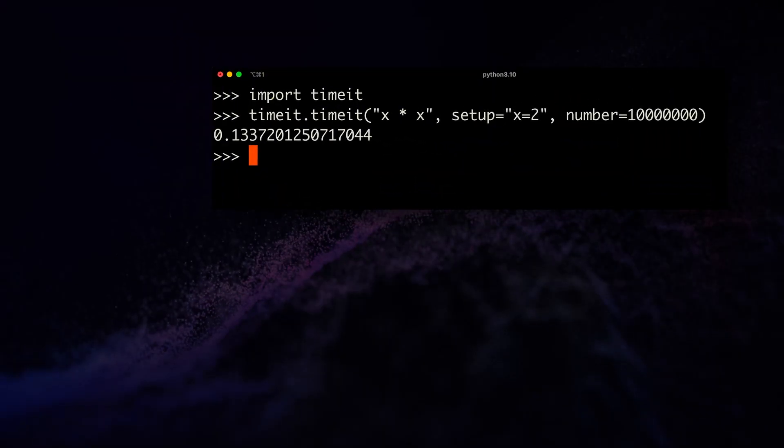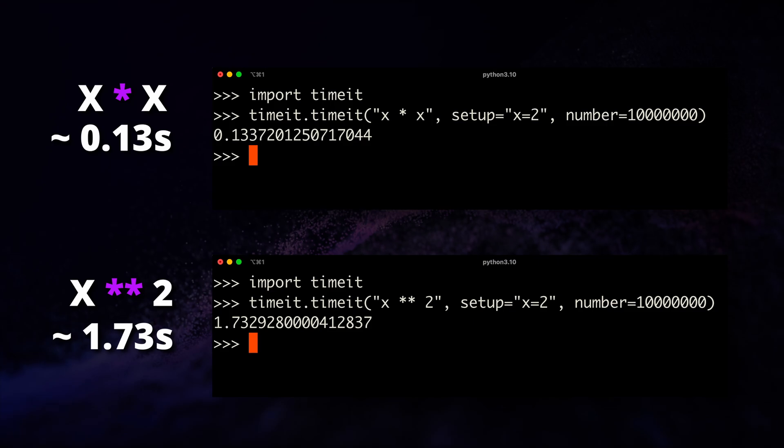I've recently been evaluating the speed of arithmetic operations in Python, and I stumbled upon something very strange. In my local version of Python, Python 3.10, x times x with integers is consistently 10 times faster than raising x to the power of 2.